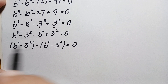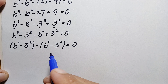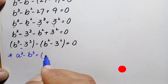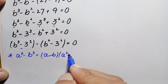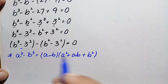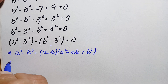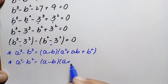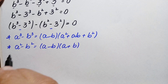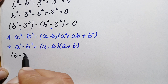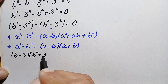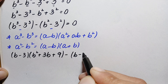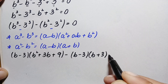We use two different algebraic identities: a cubed minus b cubed equals a minus b times a squared plus ab plus b squared, and a squared minus b squared equals a minus b times a plus b. Applying these, the first term becomes b minus 3 times b squared plus 3b plus 9, and the second term becomes b minus 3 times b plus 3, giving b minus 3 times b squared plus 3b plus 9 minus b minus 3 times b plus 3 equals 0.